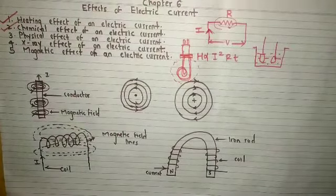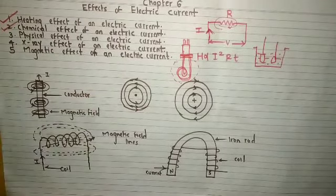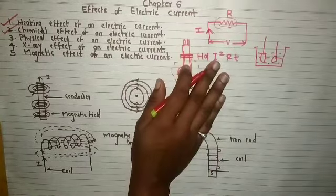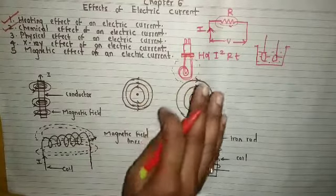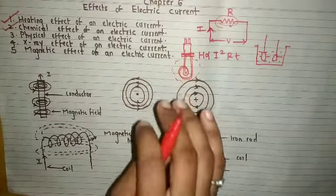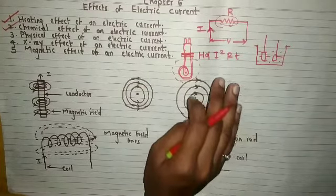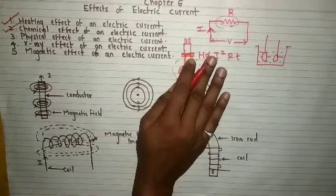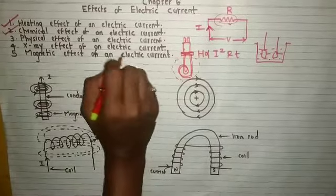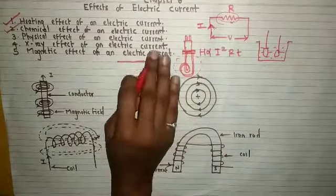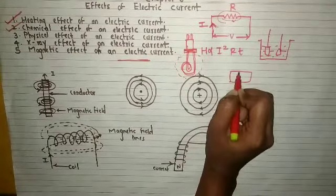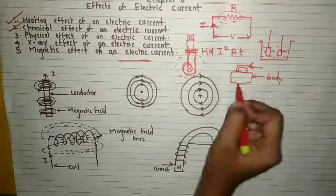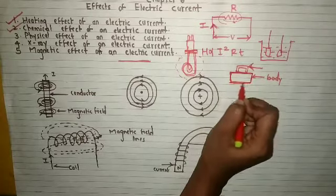Now, physical effect of an electric current. What is meant by physical effect? What will be the effect of current when it flows through our human body? Obviously, we will get a shock. Our human body is a conductor of electricity — that means current can flow from our body. It is a good conductor of electricity. The current can very easily pass through the body if any part of the body touches the live part of electricity.